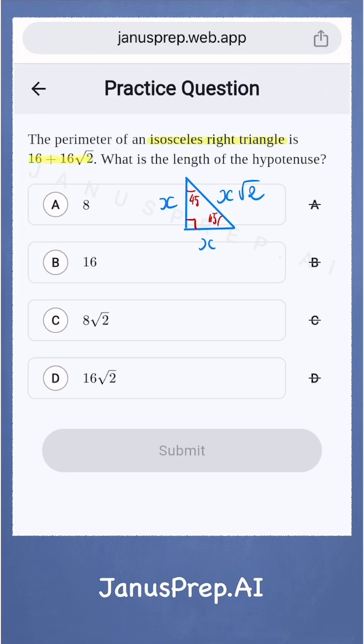The perimeter is the sum of all three sides, so let's set up the equation. x plus x plus x times square root of 2 equals 16 plus 16 times square root of 2. Let's solve for x.